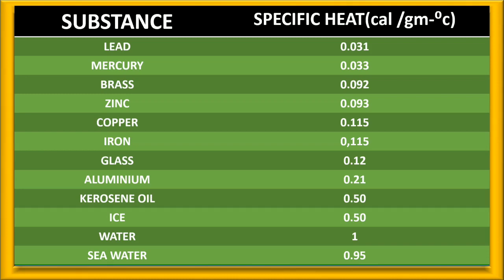The highest specific heat element in the table is water. From this we can see that water does not gain or lose its temperature faster — it is very slow compared to any other material in the table.